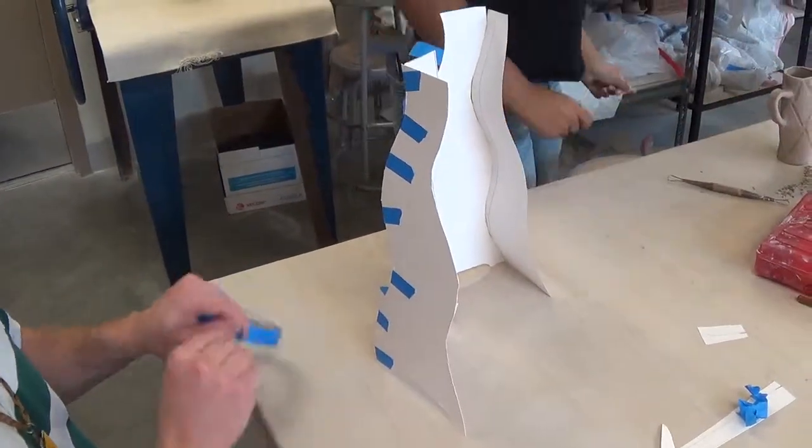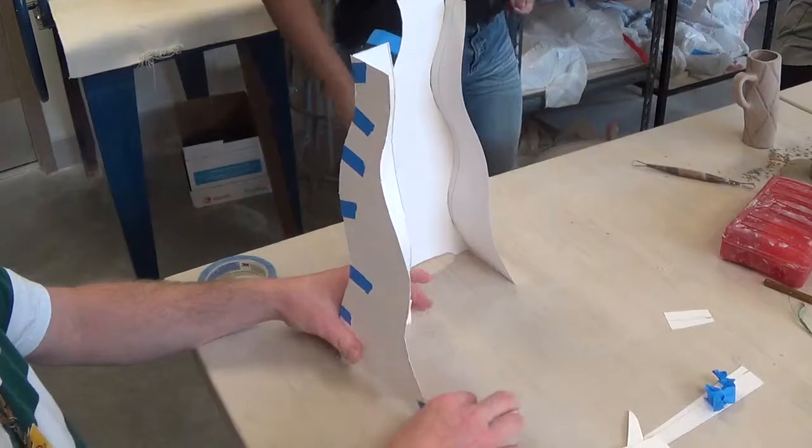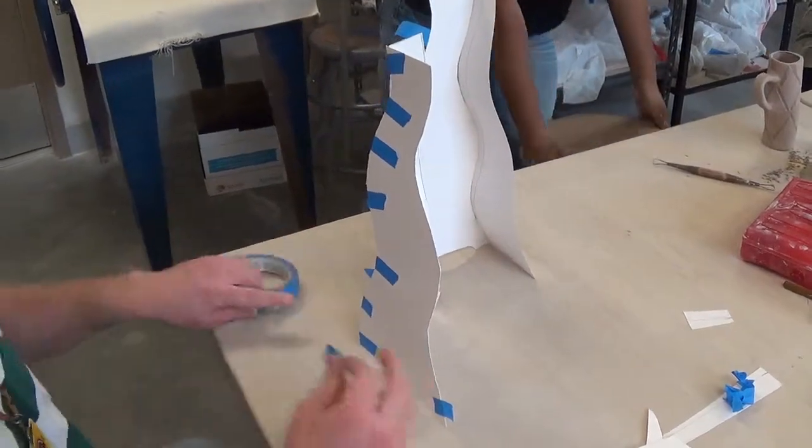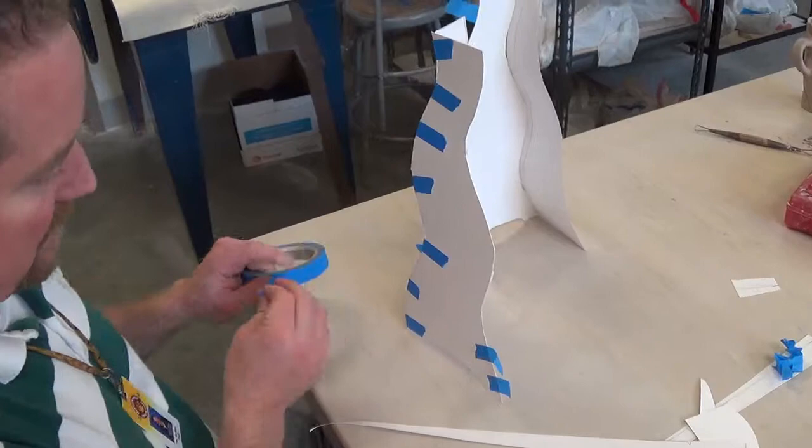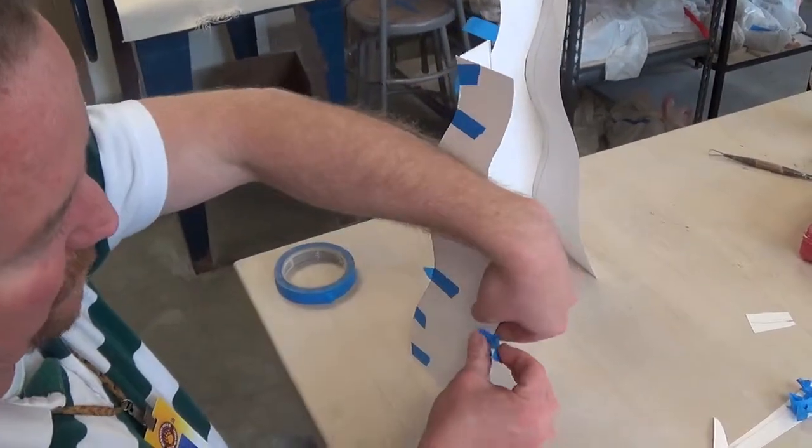Then all I do is take the tape off and go back to the original template shapes and trace my slabs, trace and cut my slabs with those.